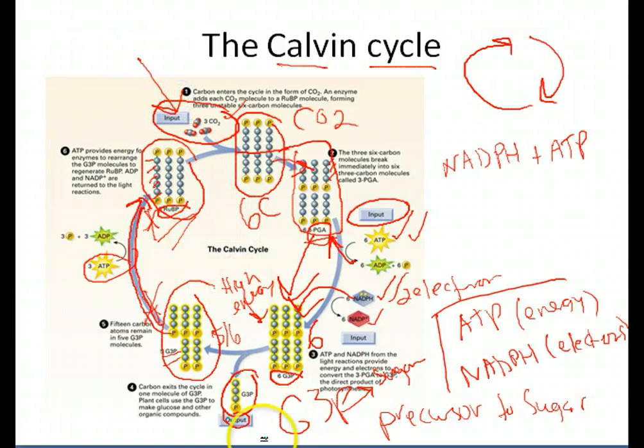Carbon dioxide in, G3P sugar out, ATP necessary, NADPH necessary. That's the extent of it. You do not need to know the names of these intermediates. I want you to understand the process. And we'll go over this again in class. So if you don't get it from this screencast, we will repeat this in class several times. And you also have the pencast notes.